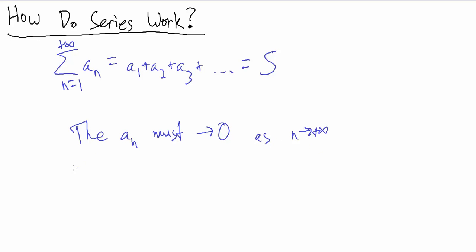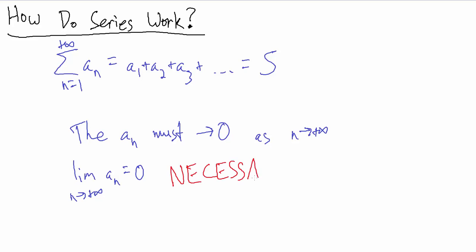In other words, the limit as n goes to infinity of a sub n has to be 0. But I do want to point out that this is actually what's called a necessary condition, but not sufficient.